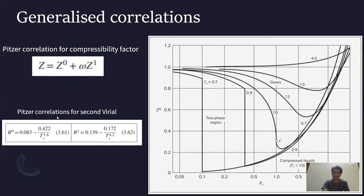The second type is the Pitzer correlation for the second virial coefficient. The second virial coefficient can be expressed as B = B⁰ + ω·B¹, where B⁰ and B¹ are functions of Tr. Once Tr is calculated from the critical temperature, B⁰ and B¹ can be determined. Once the second virial coefficient is known, we can use the relation Z = 1 + BP/RT to calculate Z.